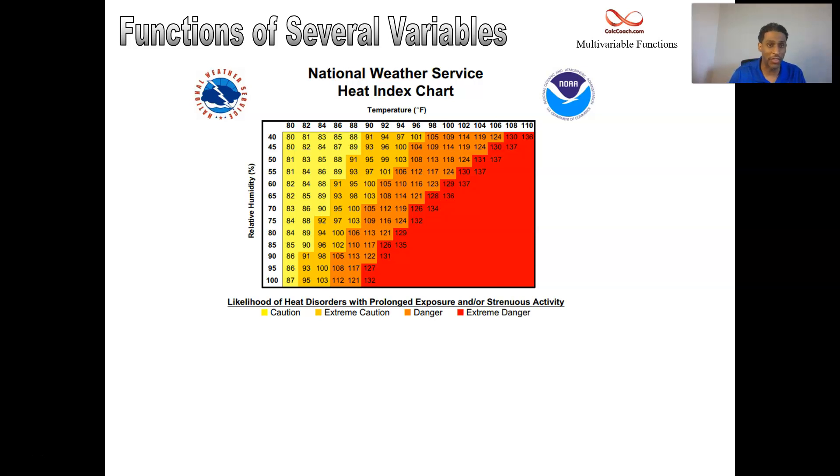Here's a real life example of a multivariable function. The heat index, when you look at the news and the weather and they say the heat index is 110 degrees, what does that mean? It's taking two input variables and coming up with an output variable.